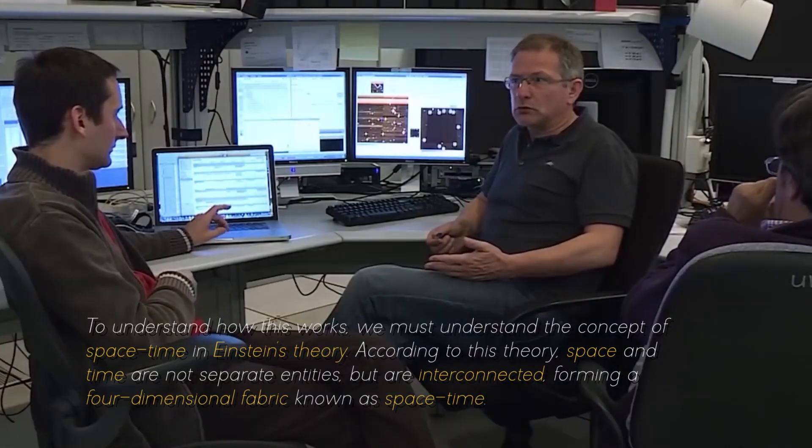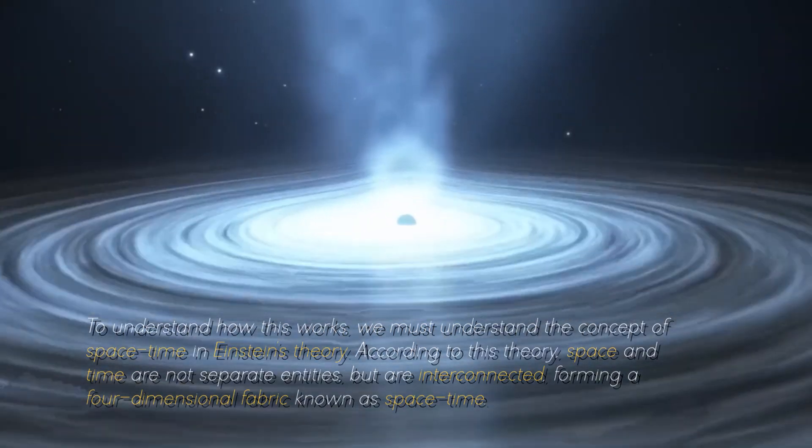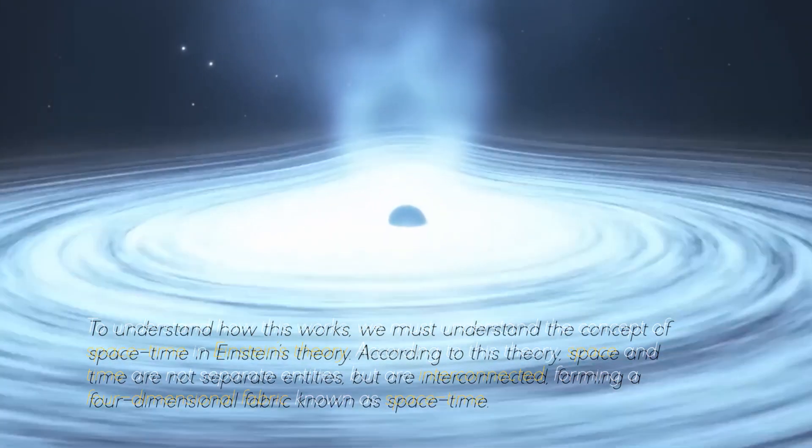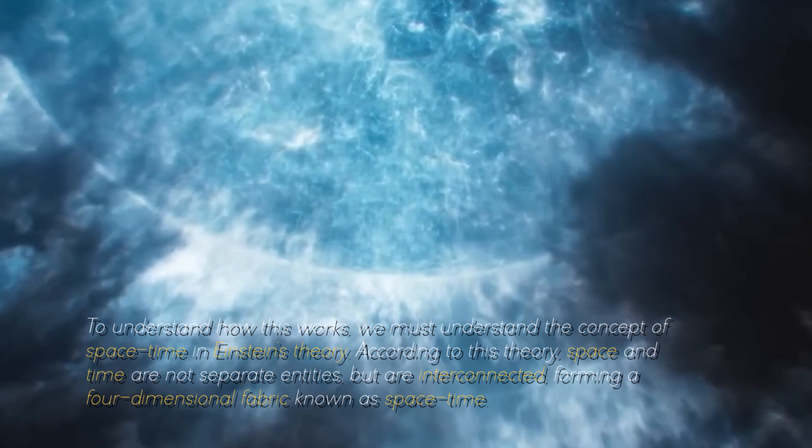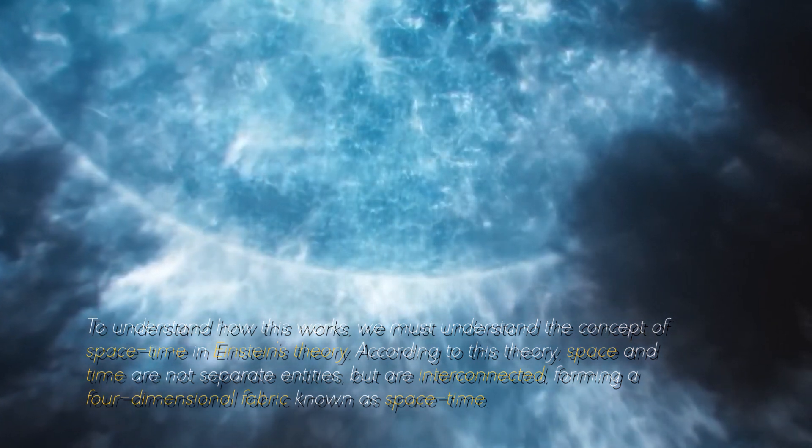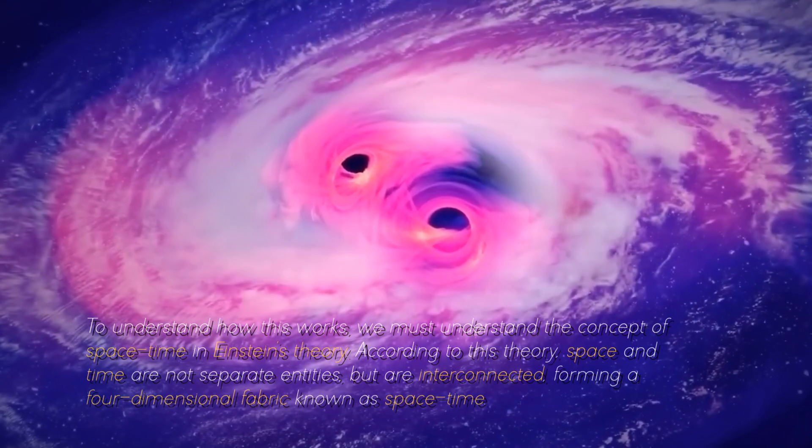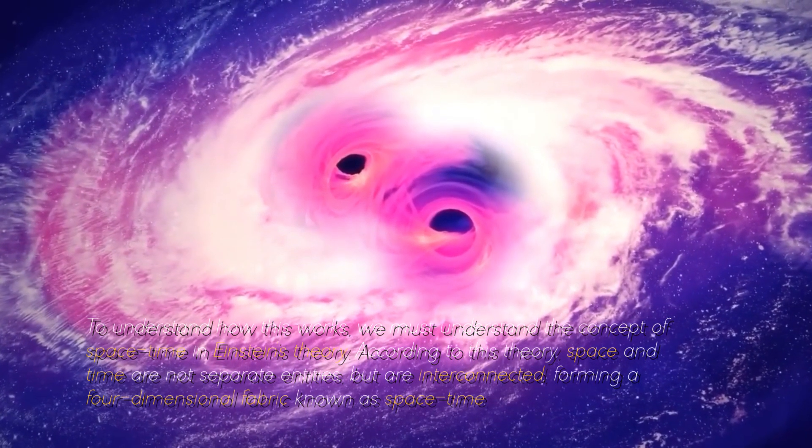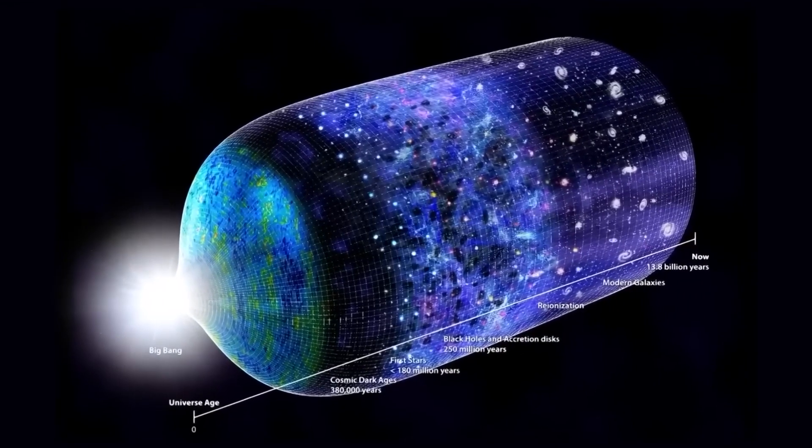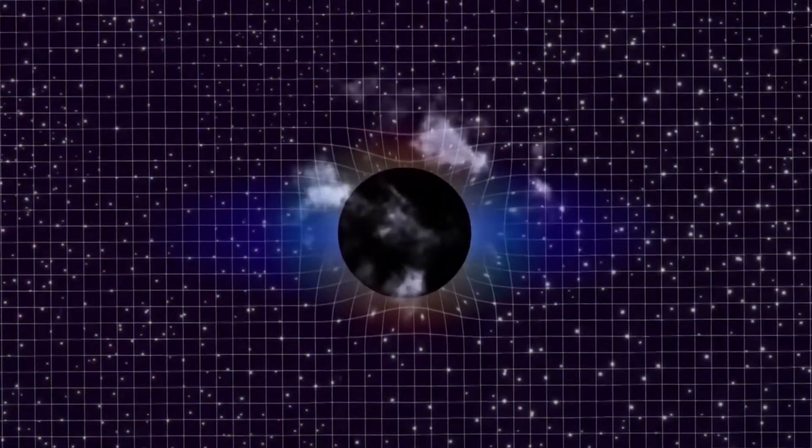To understand how this works, we must understand the concept of space-time in Einstein's theory. According to this theory, space and time are not separate entities, but are connected, forming a four-dimensional fabric known as space-time. Objects with mass warp space-time, creating a gravitational field that affects the motion of other objects.